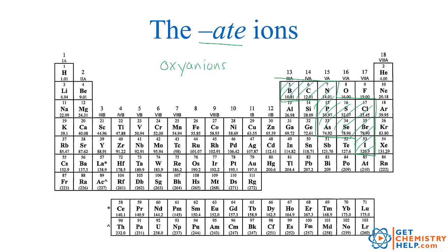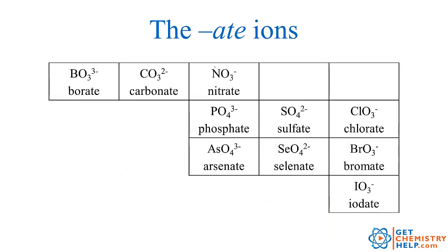So boron will make borate, carbon will make carbonate, nitrogen will make nitrate, chlorine will make chlorate, etc. Let's go over and look at these ate ions: borate is BO3 3-negative, carbonate is CO3 2-negative, nitrate is NO3 negative, phosphate is PO4 3-negative, and so on.